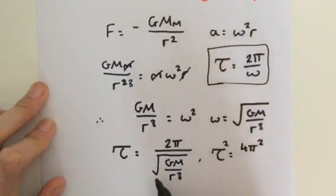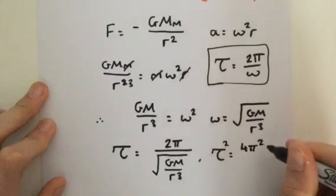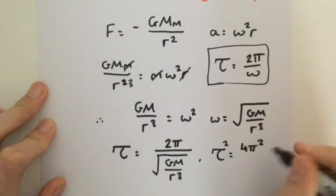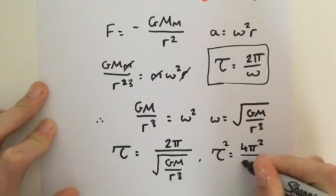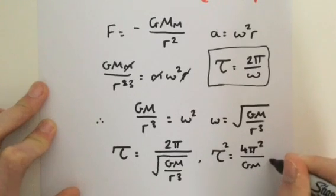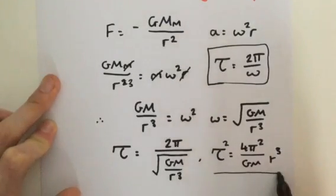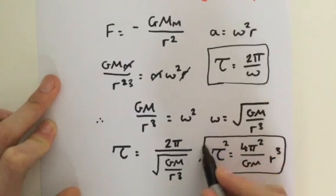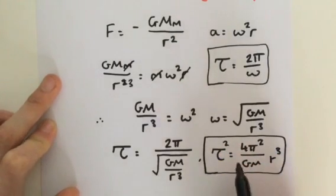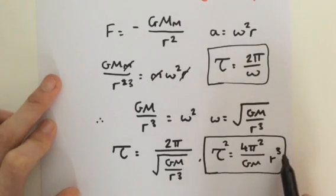We undo the square root by squaring both sides, and r³ comes to the top. So we get 4π²/GM × r³. That is our equation: τ² = 4π²r³/GM.